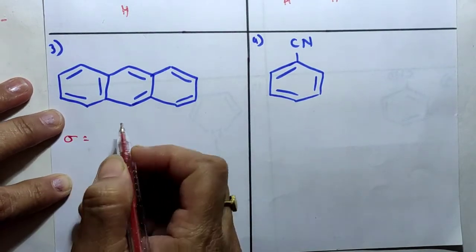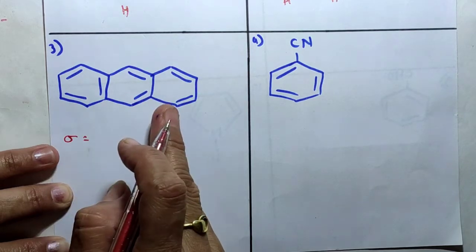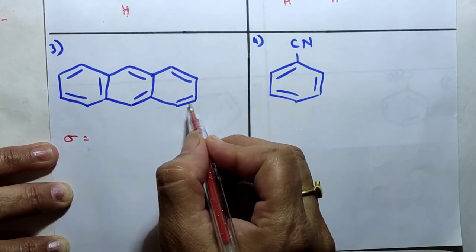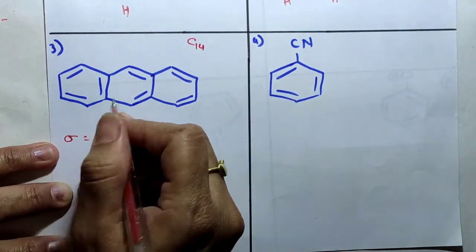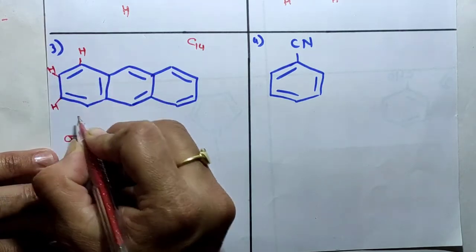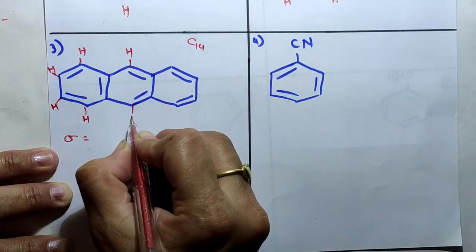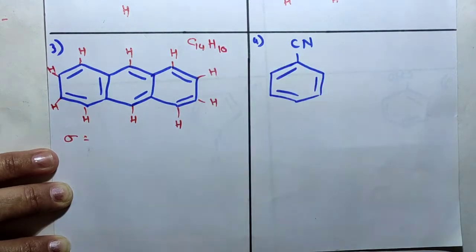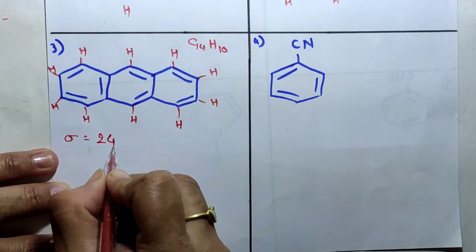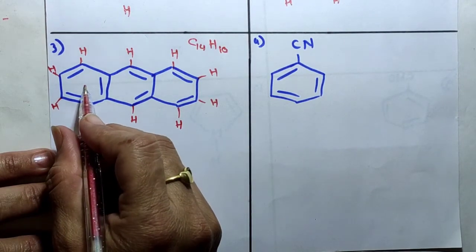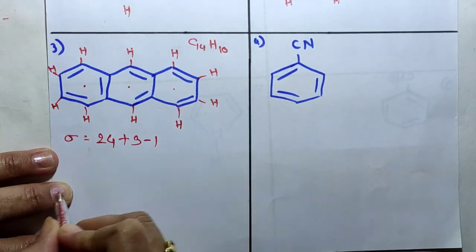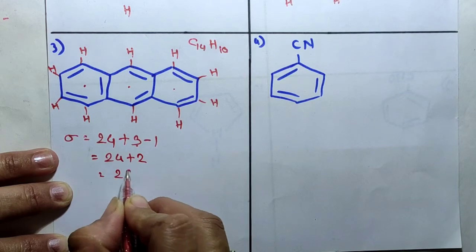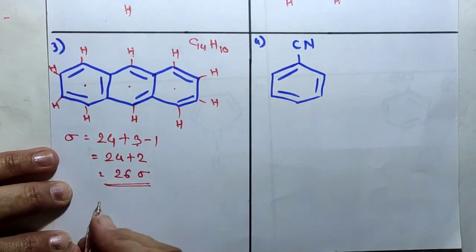Next is anthracene. Calculating sigma bonds: total carbon atoms = 14, total hydrogen atoms = 10, so the molecular formula is C14H10. Total number of atoms = 24. Number of rings = 3, minus 1 = 2. Therefore 24 + 2 = 26 sigma bonds are present in anthracene.